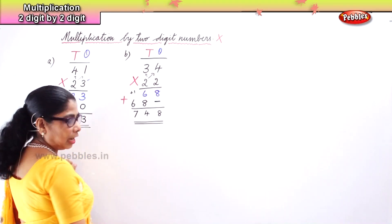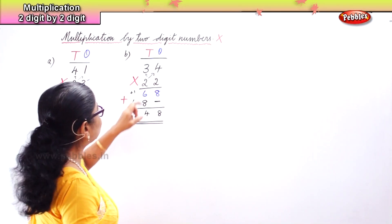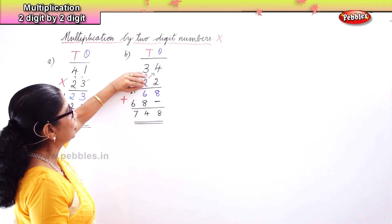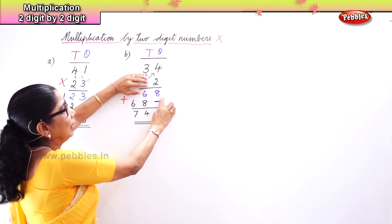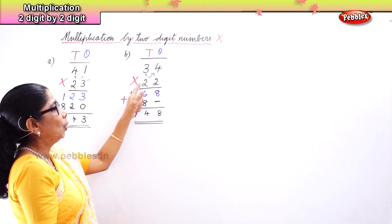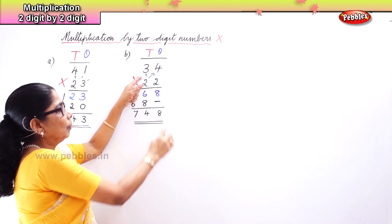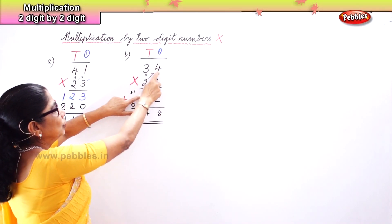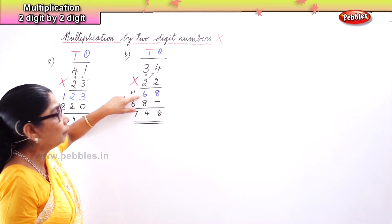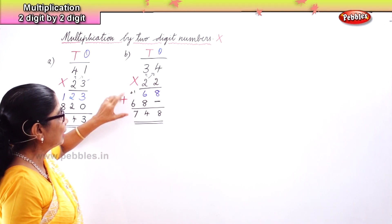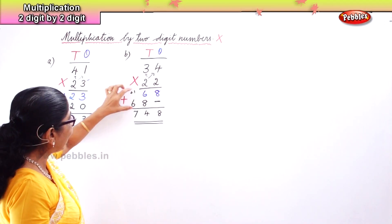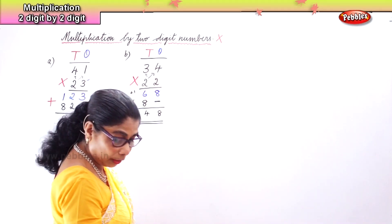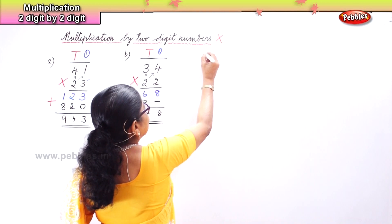Let's look at it once more. For 34 multiplied by 22: first forget the tens digit 2, take the ones digit 2 — four twos are eight, three twos are six. For the second number, put a dash or zero, then four twos are eight aligned below, three twos are six. Add the two rows together to get your answer.